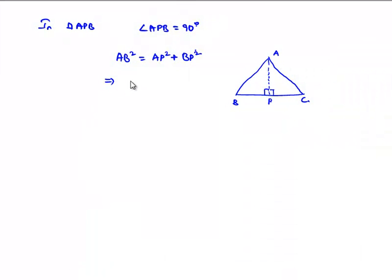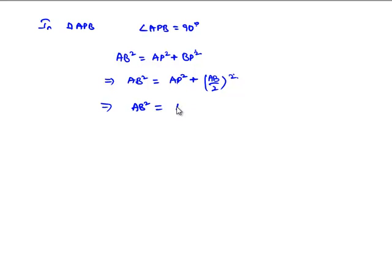That implies AB square, let it remain as it is, which is equal to AP square plus we got BP or PB as AB by 2. So, let us replace it: AB by 2 whole square is nothing but AB square by 4.